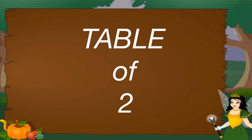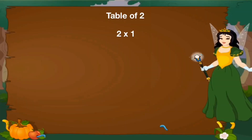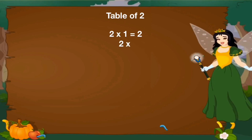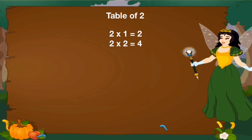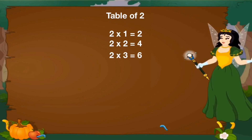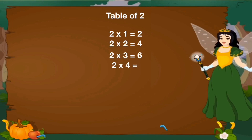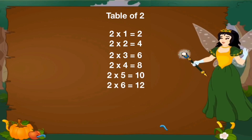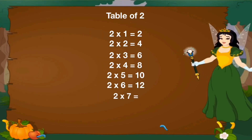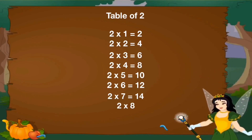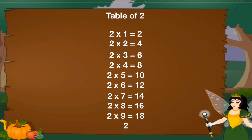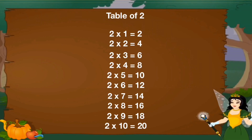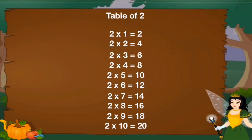Let's revise table of 2. 2 1's are 2, 2 2's are 4, 2 3's are 6, 2 4's are 8, 2 5's are 10, 2 6's are 12, 2 7's are 14, 2 8's are 16, 2 9's are 18, 2 10's are 20.